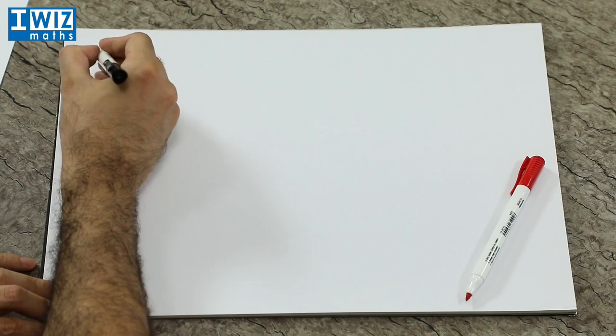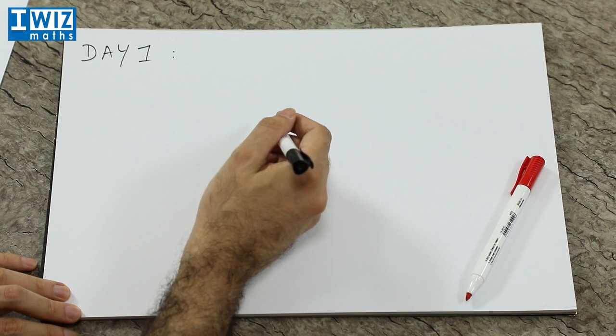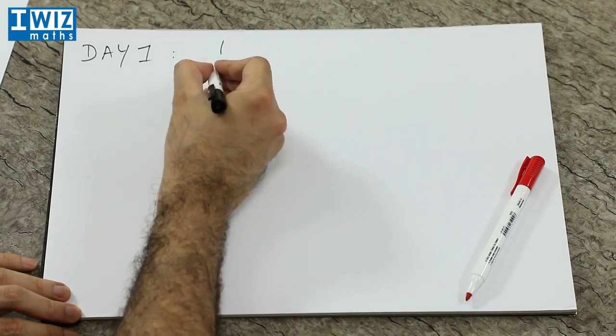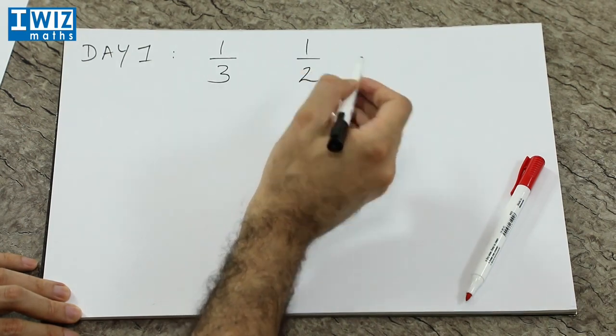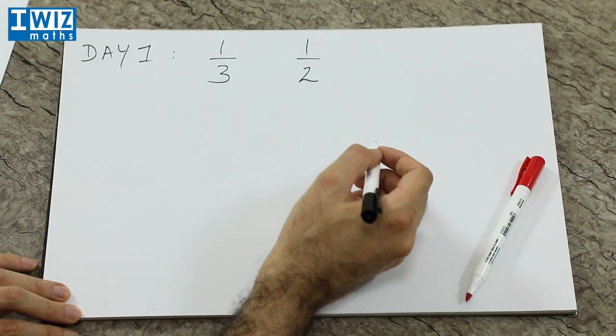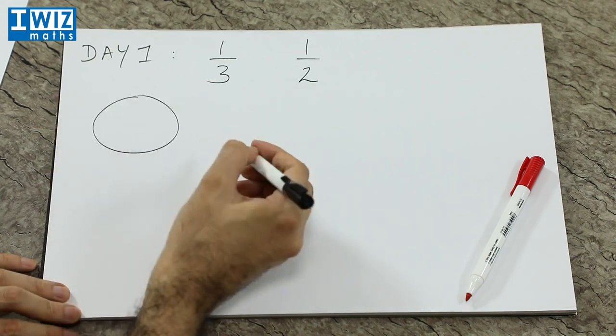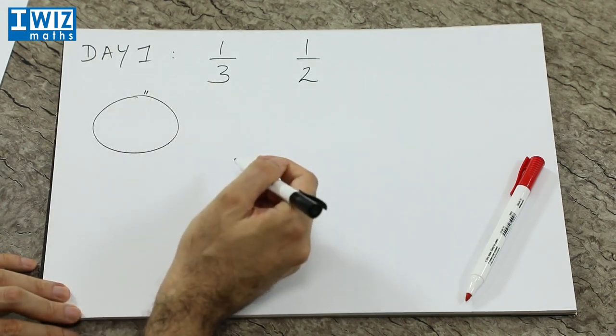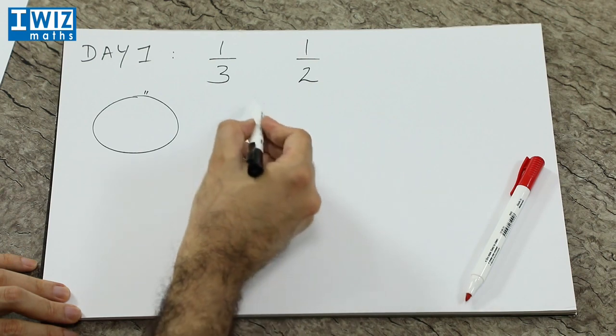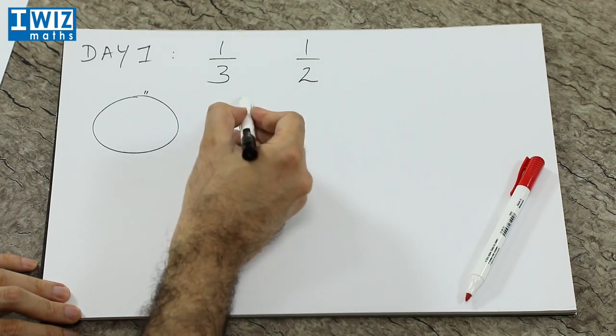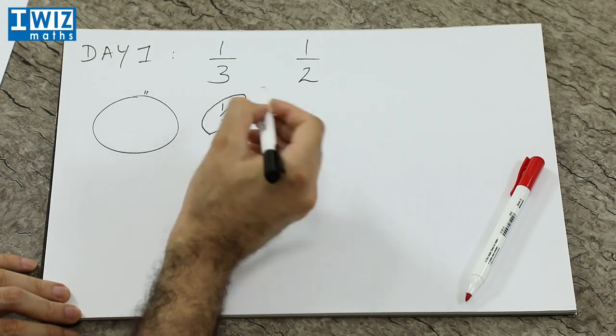Let's look at the case of day one. In day one, what basically happened was that you have one-third of the apple before lunch, and then you have one-half of the apple after lunch. So let's get a visual feel of this. Let's actually draw an apple. My drawing of an apple isn't great, but let's just assume that's an apple.